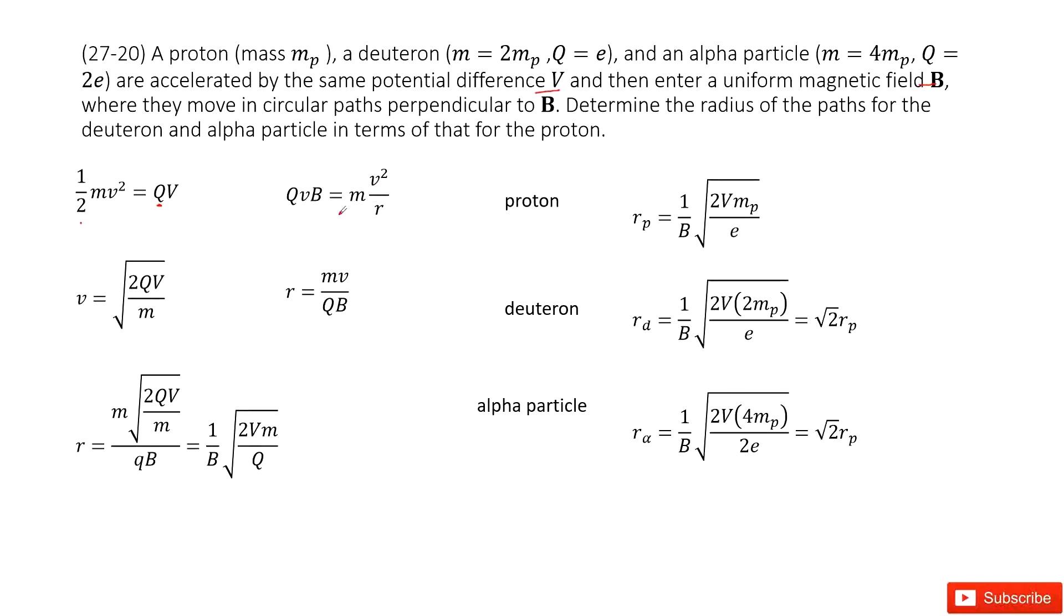If we want to know the radius for this circular motion, we can write the function: R = mv/QB.